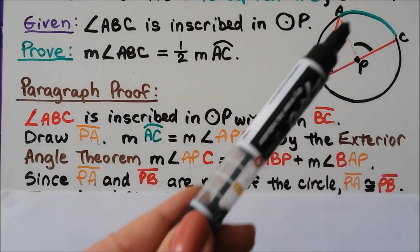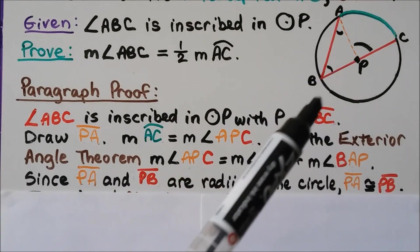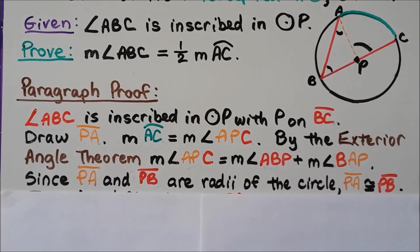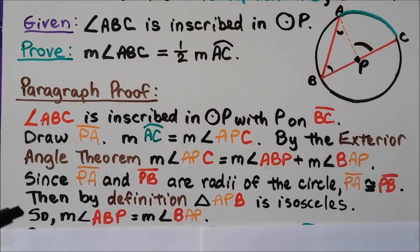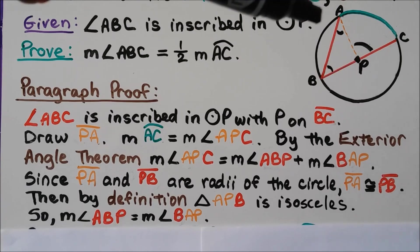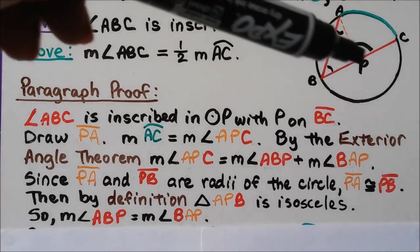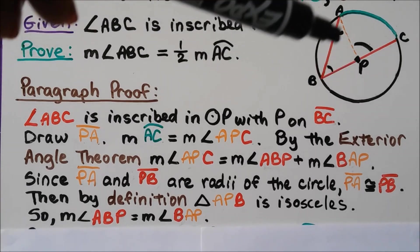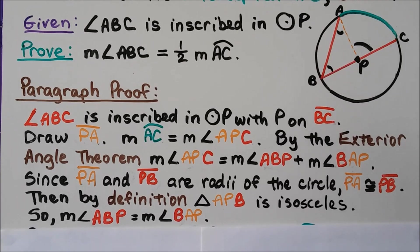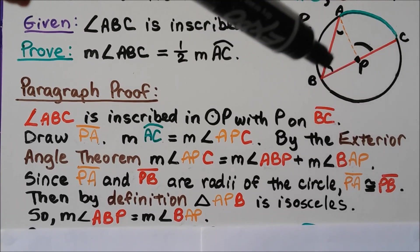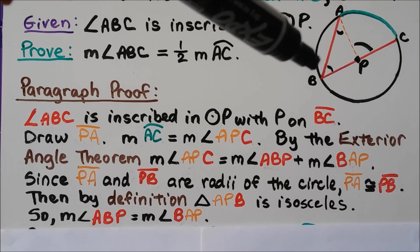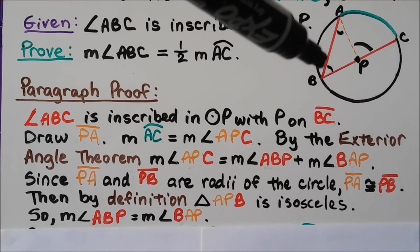Since segment PA and segment PB are radii of the circle, segment PA is congruent to segment PB. By definition, triangle APB is isosceles. So the measure of angle ABP is equal to the measure of angle BAP.